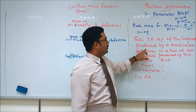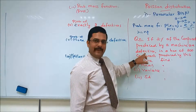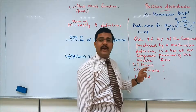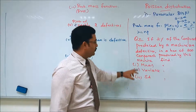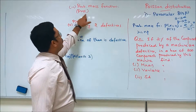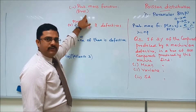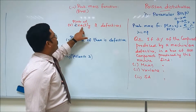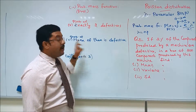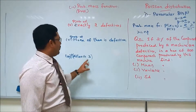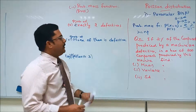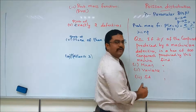Let us discuss a problem. If 2% of the components produced by a machine are defective, in a box of 200 components produced by this machine, find: the mean, variance, standard deviation, and probability mass function; the probability of getting exactly two defectives; the probability of getting none defective; and the probability of at least three defectives.